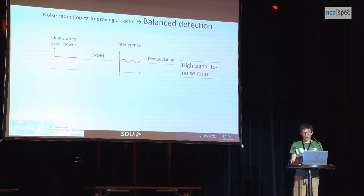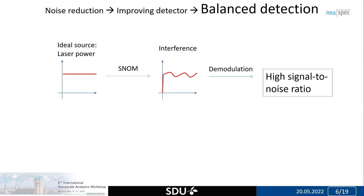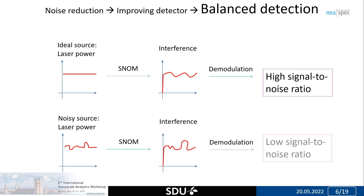The final tip about detection is a bit more complicated, but if you use it right you will gain really a lot, because it will help reduce noise from the source. If you have an ideal source, it has constant power. Put this source into the SNOM, and at the output there will be some modulation by interference because of SNOM. The system does demodulation and you get a high signal-to-noise ratio. But that's not always the case — there is always some noise in the source. Some sources are approved by Neospec; some have larger noise. When there is a noisy source, this noise sums up to the detection and goes into the interference pattern, so after demodulation you will get a low signal-to-noise ratio.